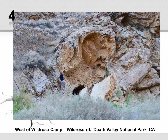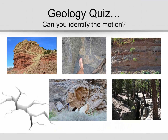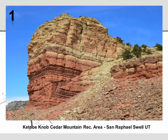Number four shows rock layers west of Wildrose Campground on Wildrose Road in Death Valley National Park. Number five is specifically called Earthquake Fault, located just outside Mammoth Mountain Ski Area in Mammoth Lakes, California. Could you identify all five of these images? What sort of plate motion caused each? Are they normal faults, reverse faults, folds, or rifts? Let's take a look at each.